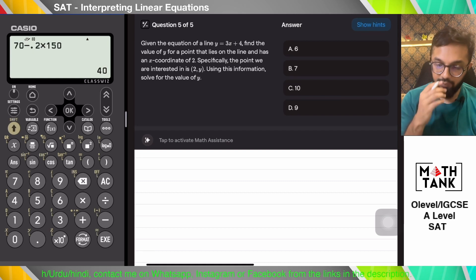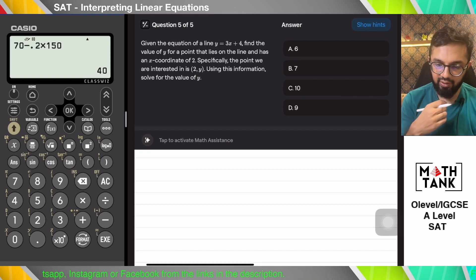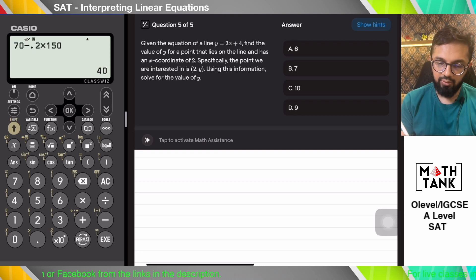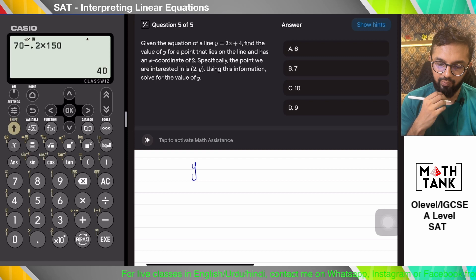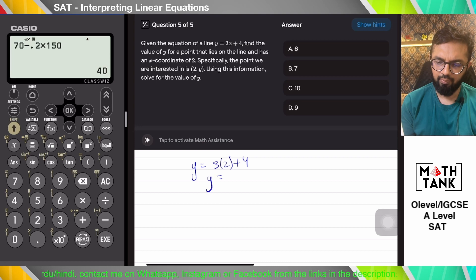Given the equation of a line y equals 3x plus 4, and the point has an x coordinate of 2, specifically the point is (2, y), solve for the value of y. So 3 times 2 plus 4, that's simple: 10.